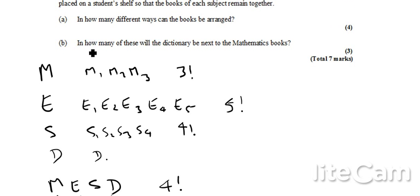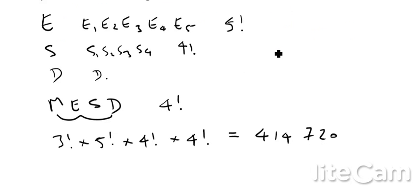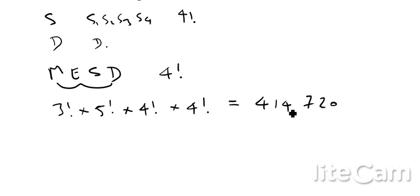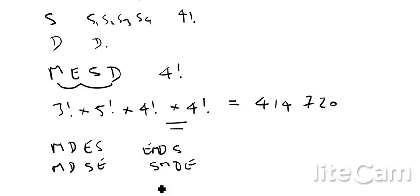Secondly, it says in how many of these will the dictionary be next to the mathematics books? So this is the total number of ways it can be rearranged. How many times will I actually end up with a situation where the dictionary and the maths books will be together? I guess there's a few ways of doing it, but possibly the easiest way is to actually think about those combinations. So I'd end up with M, D, E, S or I could have M, D, S, E or I could have E, M, D, S or S, M, D, E or S, E, M, D or E, S, M, D.